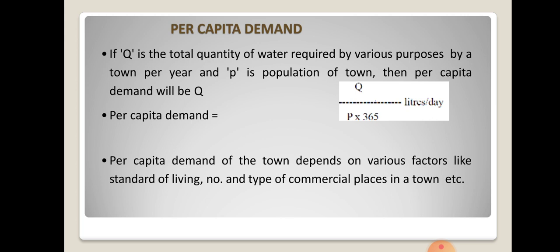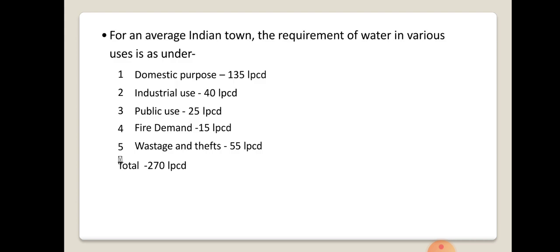The factors on which per capita demand depends include: standard of living, the number and type of commercial places in a town, and whether the area is industrialized and commercialized. For an average Indian town, the requirement is: domestic — 135 LPCD, industrial — 40 LPCD, public use — 25 LPCD, fire demand — 15 LPCD, and wastage and theft — 55 LPCD. On average, the total requirement of water is 270 litres per day.